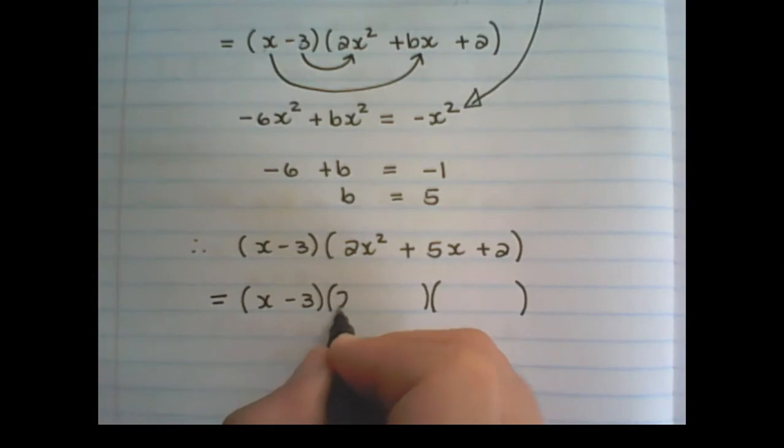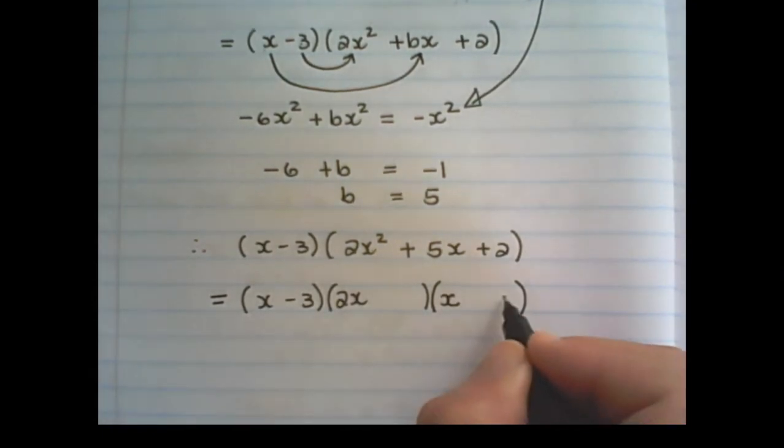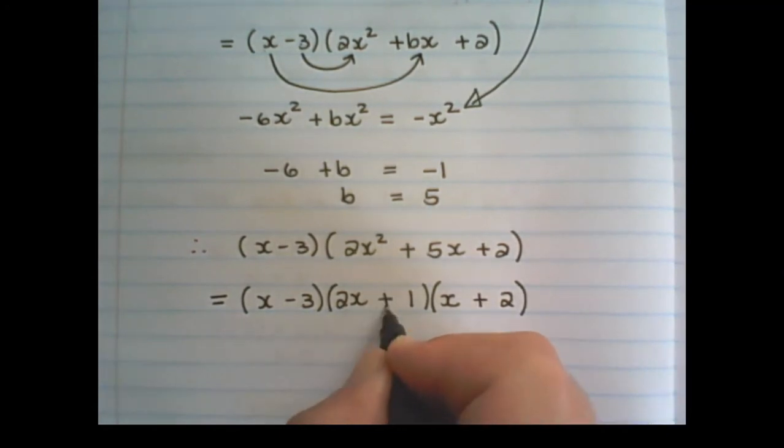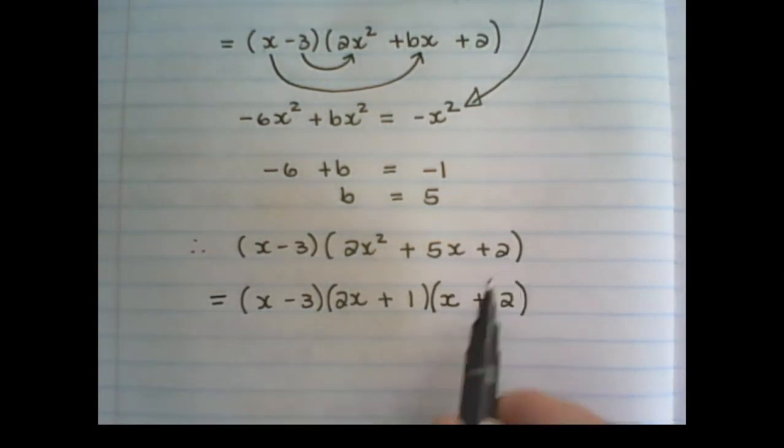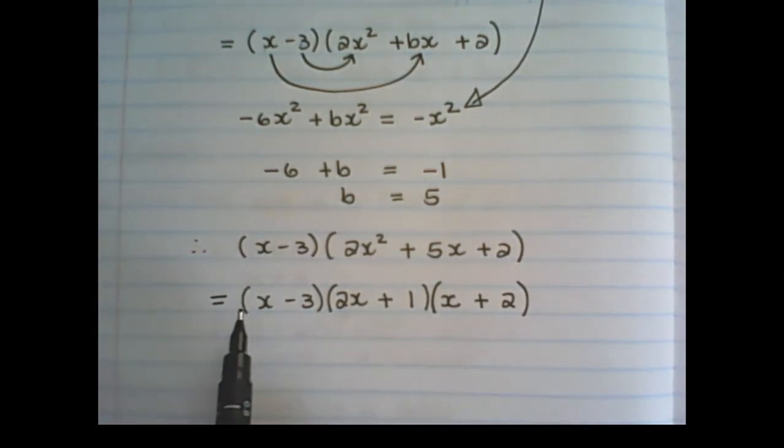So 2x times x and 2 times 1, plus and plus. If I multiply these two brackets out, I will get 2x squared plus 2 and plus 5x in the middle. And this is my final factorization of the original expression.